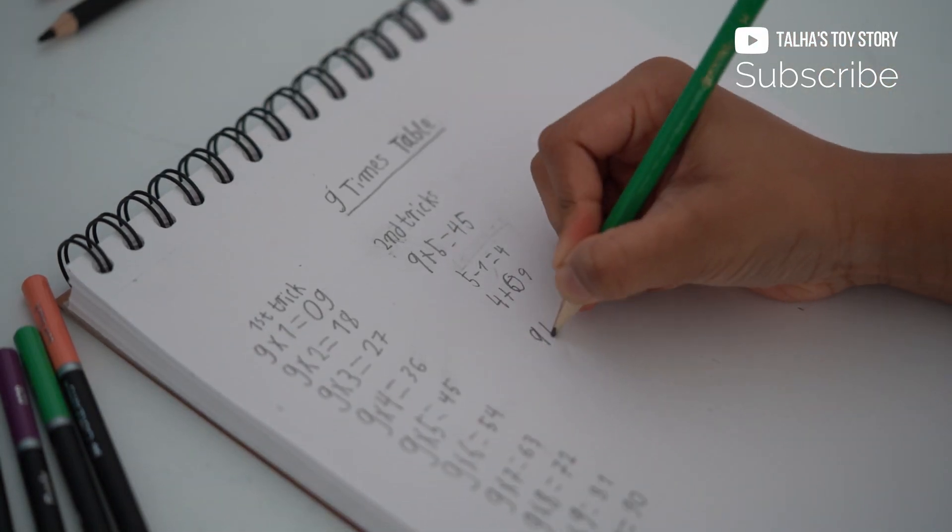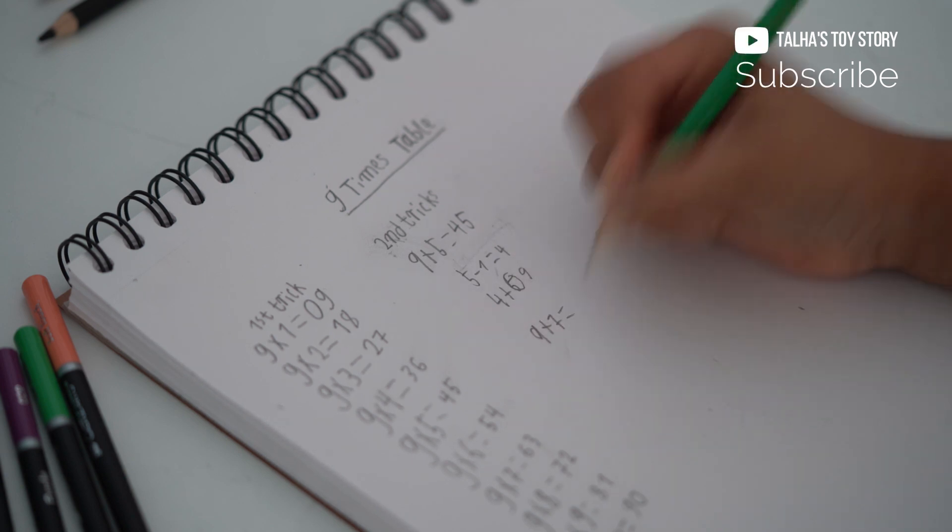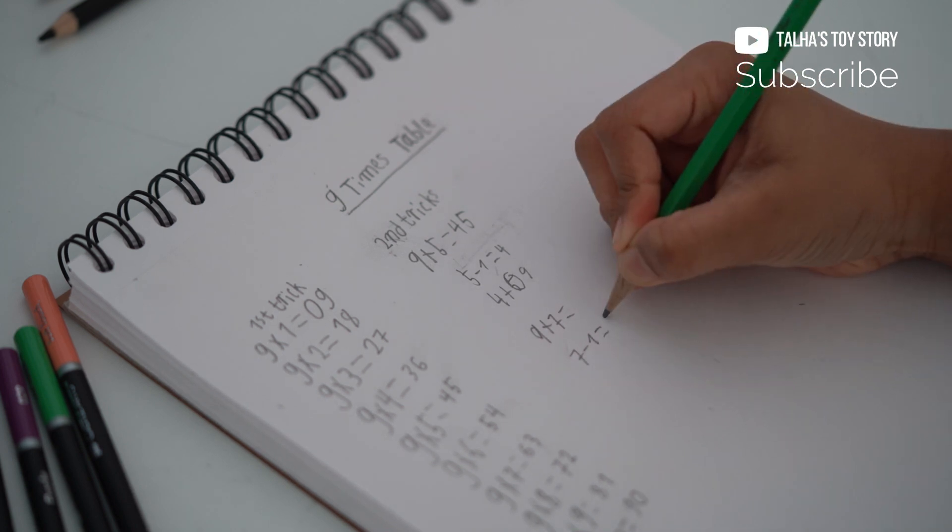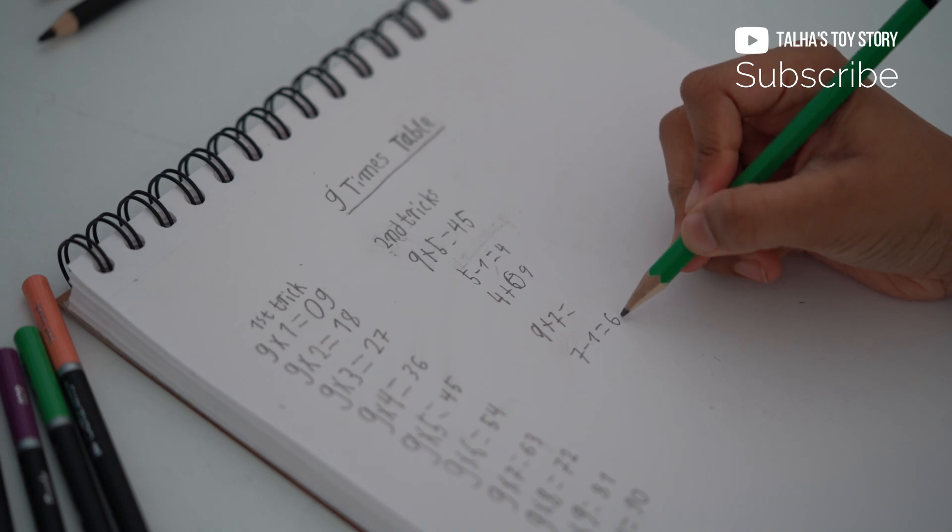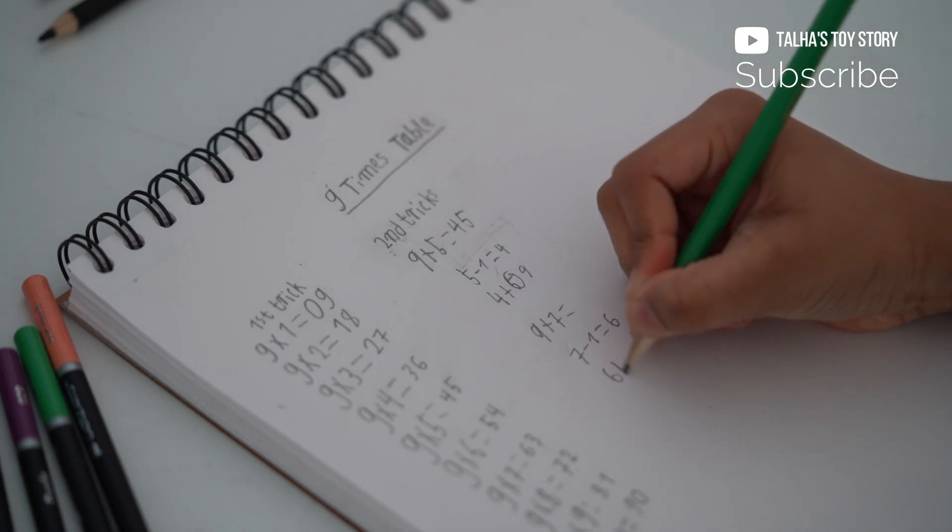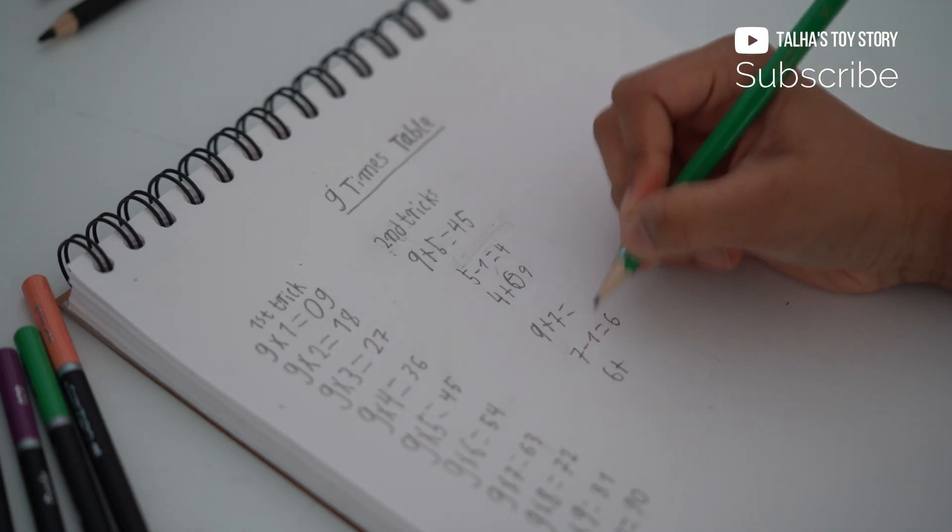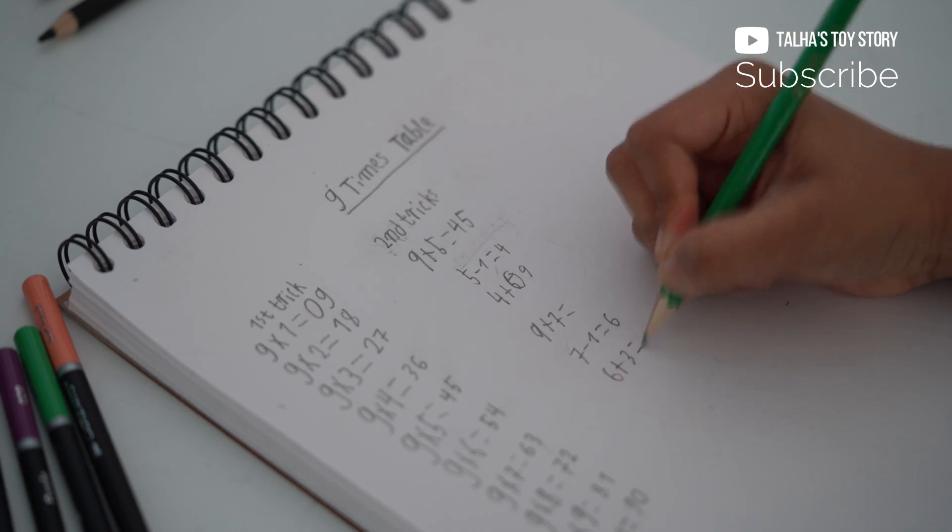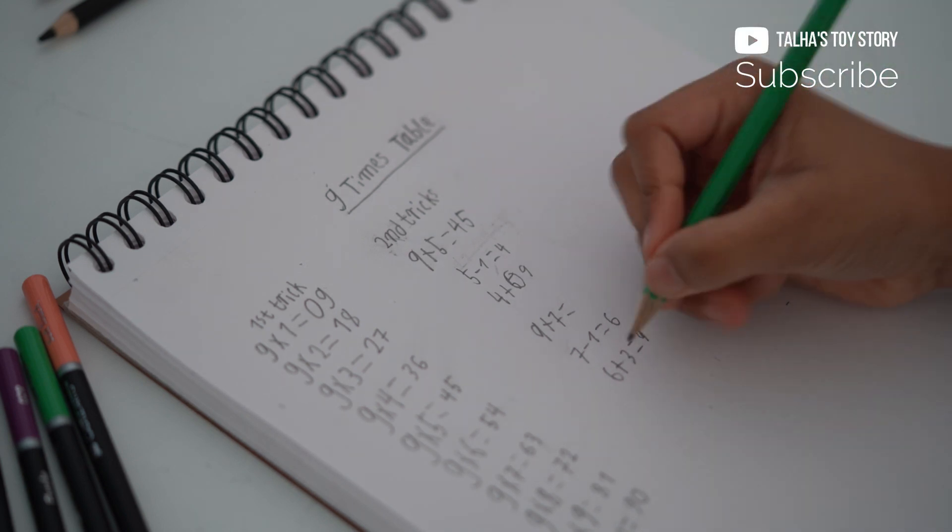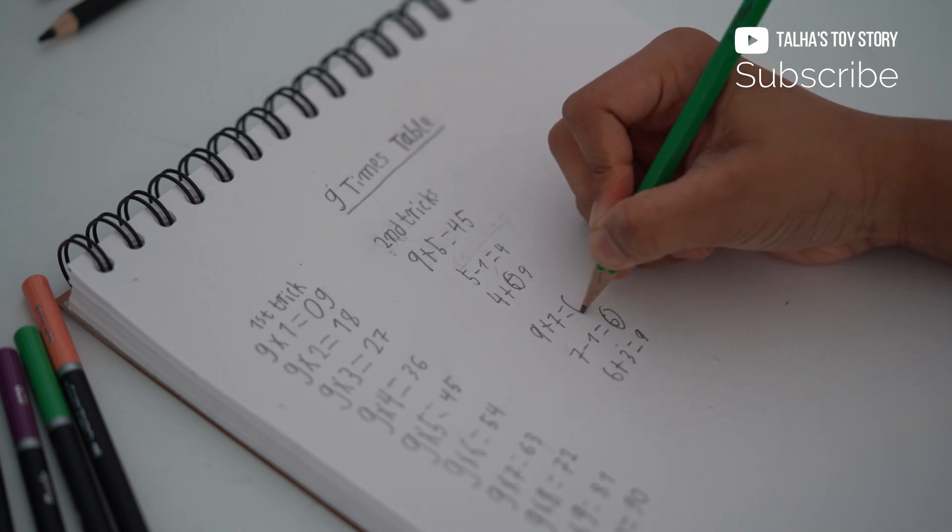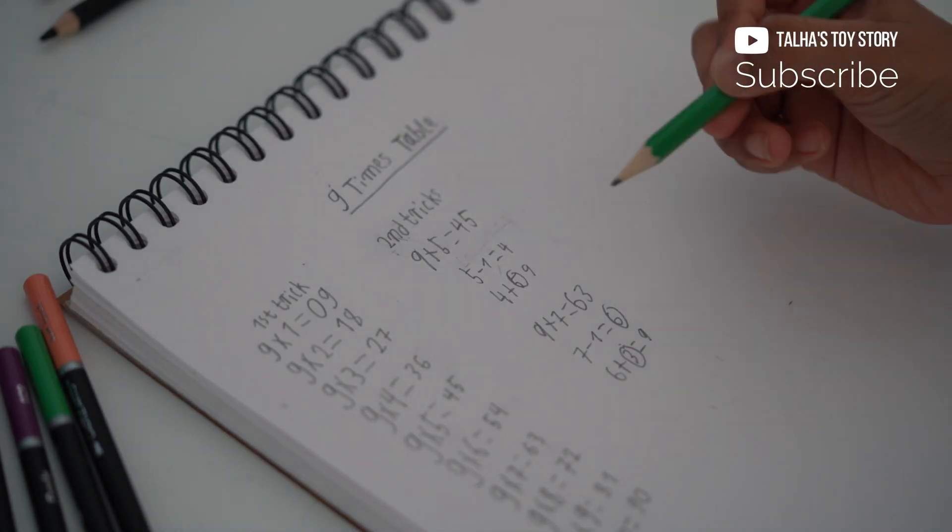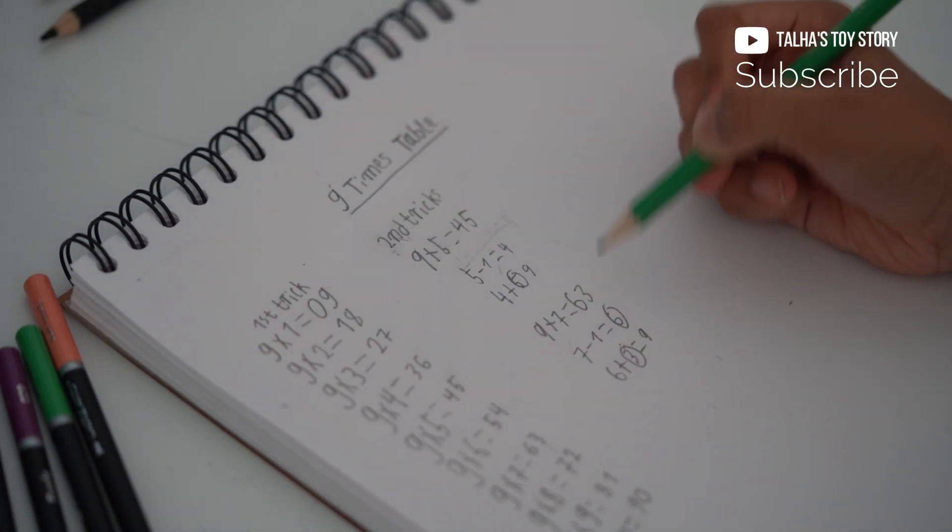Now we'll do 9×7. Here we take 7 minus 1, which is 6. 6 plus what equals 9? That is 3. The answer is 9. Now we write 6 first, then 3. The answer is 63.